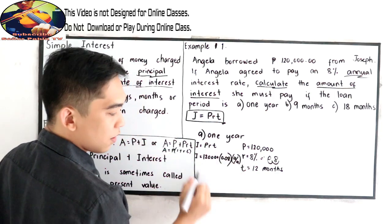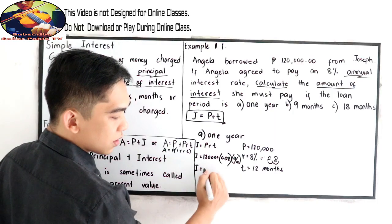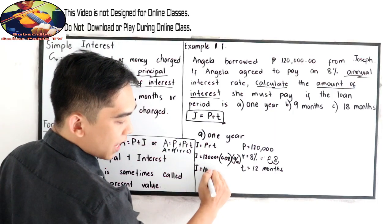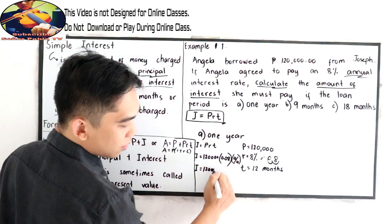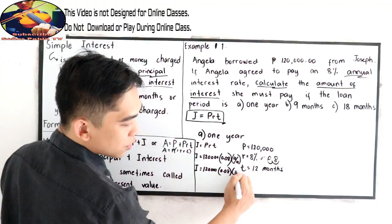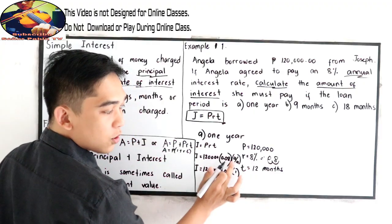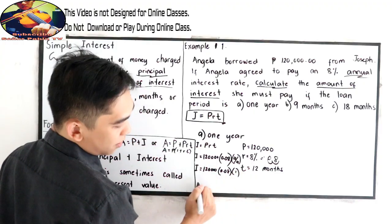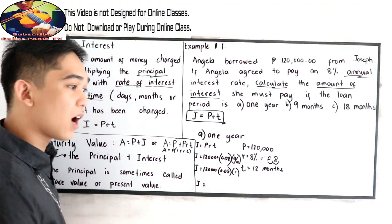Now the interest is 120,000 times 0.08 times 1. Why 1? Because 12 divided by 12, that is 1.